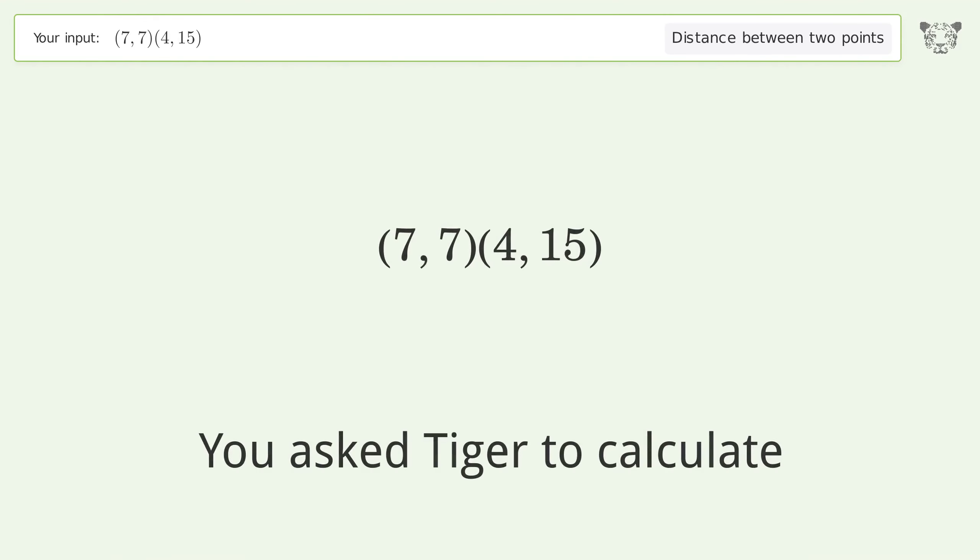You asked Tiger to calculate the distance between two points. The distance between the two points is the square root of 73 or 8.544.